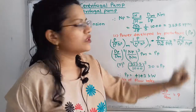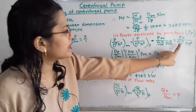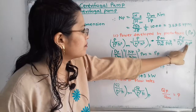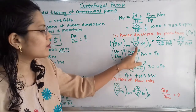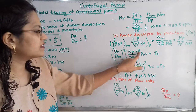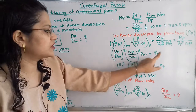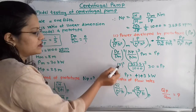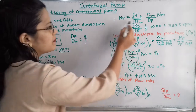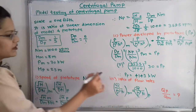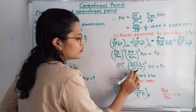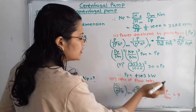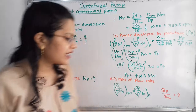Rearranging to find P_p: P_p = (D_p / D_m)⁵ × (N_p / N_m)³ × P_m. Substituting values: P_p = (5/1)⁵ × (353.5/1000)³ × 30. Calculating this gives P_p = 4143 kilowatts.